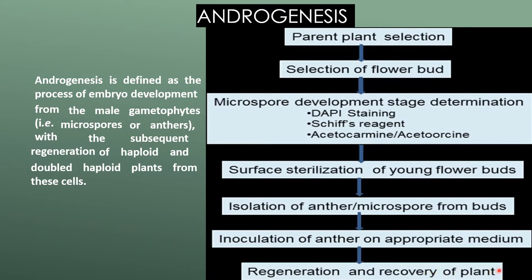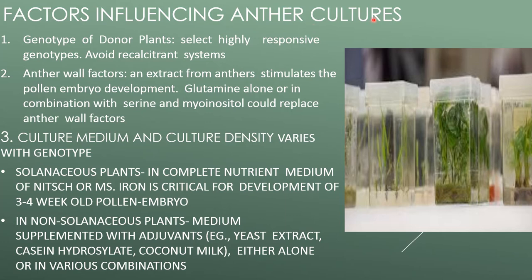Factors influencing anther culture include the genotype of the donor plant; selectively highly responsive genotypes should be selected to avoid recalcitrant systems. Regarding anther wall formation, an extract from the anther stimulates pollen embryo development; glutamine alone or in combination with serine and myo-inositol could replace anther wall formation. Culture medium and anther density vary with genotype. For solanaceous plants, compatible nutrient media such as Nitsch or MS medium are used, and iron is critical for development of three to four week old pollen embryos.